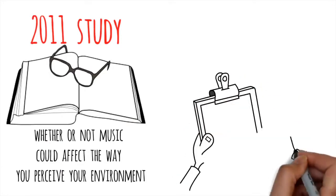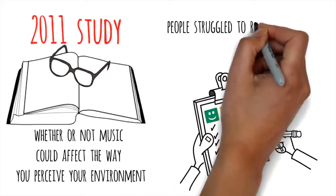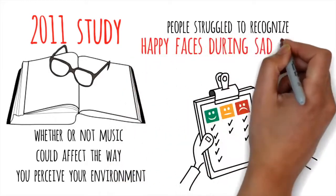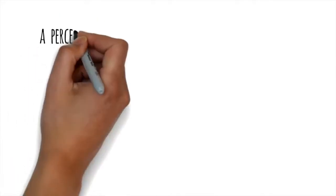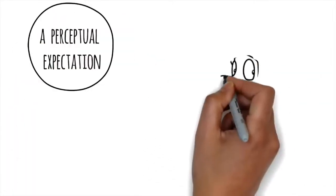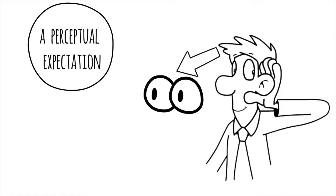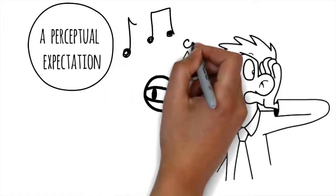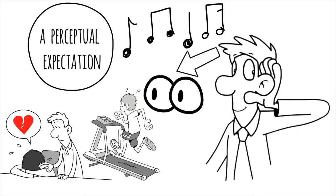Subjects were asked to identify happy and sad faces while different songs played. Turns out, people struggled to recognize happy faces during sad songs and vice versa. The music was making them see things that weren't there. It created something called a perceptual expectation. When you hear one thing through your ears, your brain will expect to see something similar through your eyes. This is why music can improve a workout or help after a breakup. It sets the tone by creating that perceptual expectation.